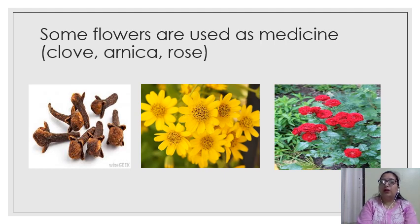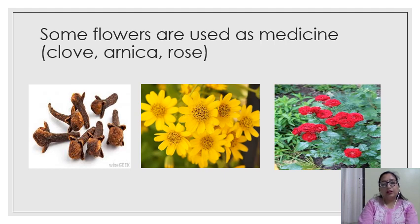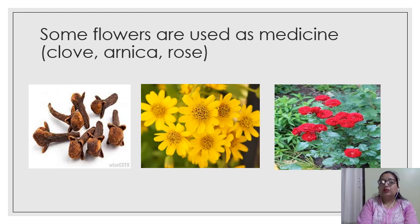Next is the rose flower. Rose has a lot of medicinal value. If our eyes are very stressed and we need something cooling, we use rose water. We dip cotton in rose water and keep it on our eyes — it has a lot of cooling effect and is of medicinal use. So clove, Arnica, and rose are all used as medicine.